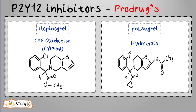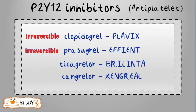For prasugrel, it undergoes hydrolysis — meaning chemical bonds are cleaved via the addition of water, which is usually a step toward degradation of a substance. Importantly, remember that clopidogrel and prasugrel are irreversible inhibitors, while ticagrelor and cangrelor are reversible inhibitors of the P2Y12 receptors.